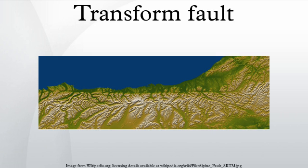A transform fault or transform boundary, also known as conservative plate boundary since these faults neither create nor destroy lithosphere, is a type of fault whose relative motion is predominantly horizontal in either sinistral or dextral direction.